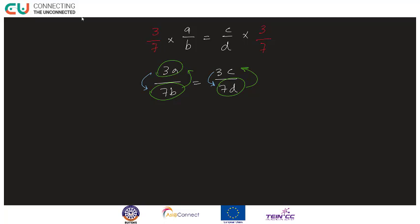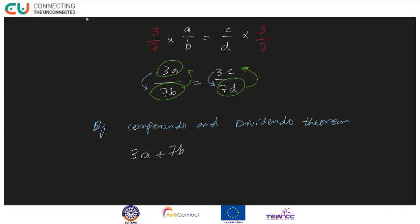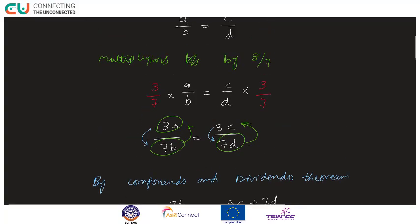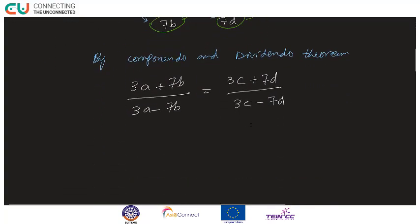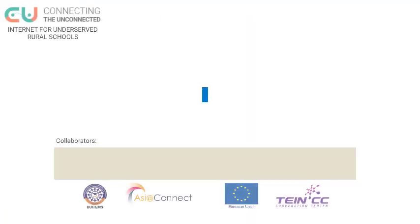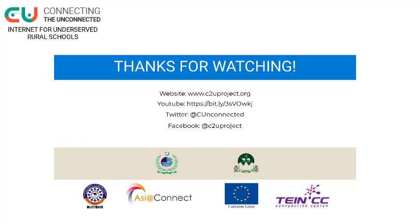Combine karke yeh mere paas componendo and dividendo theorem ban raha hai. By using componendo and dividendo theorem: componendo ka matlab hai 3A plus 7B upar aayega aur dividendo kehta hai 3A minus 7B neeche aayega. Isi tarah right hand side mein 3C plus 7D upar aur 3C minus 7D neeche aayega. Jo ki proof ho gaya — hence proved.